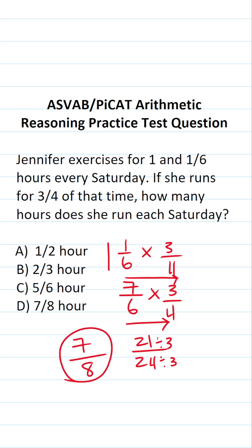So if she exercises for one and one-sixth hours every Saturday, and she runs for three-fourths of that time, she's running for seven-eighths of an hour.